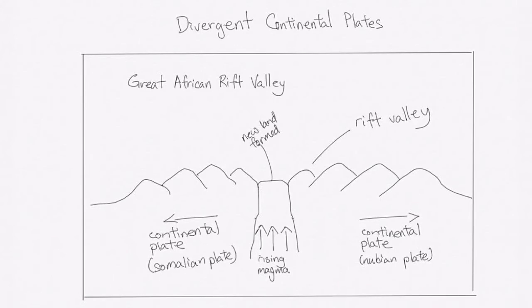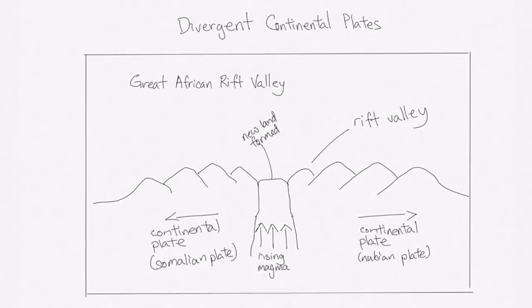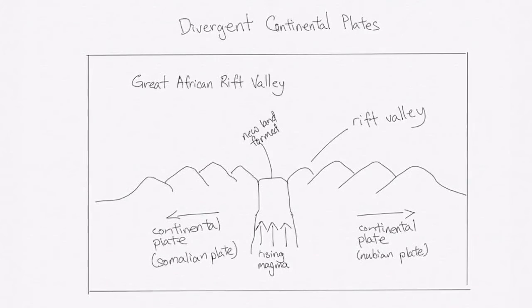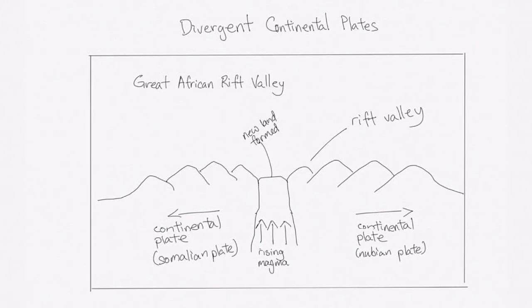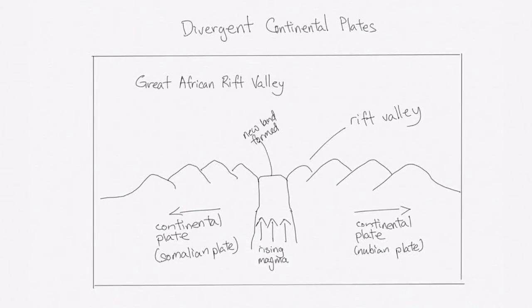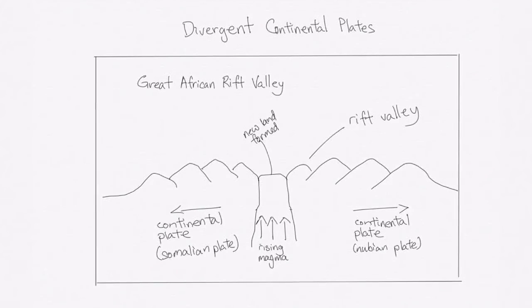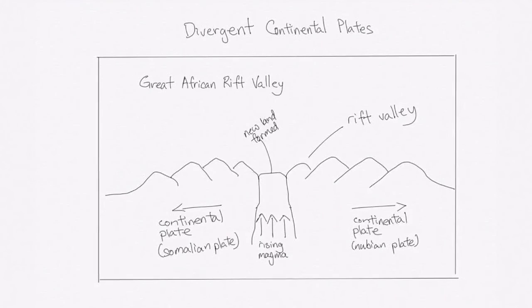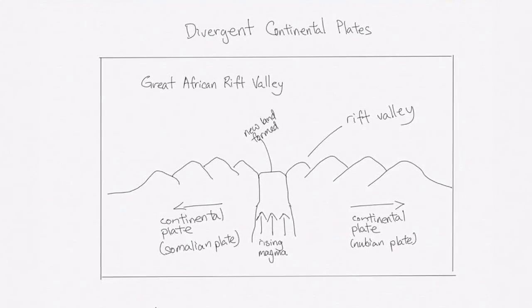Now we move on to Divergent Continental Plates, plates that move apart from one another. Within your syllabus, there is one occurrence of this that is highlighted. This is where you find the Great African Rift Valley. At this location, your Somalian plate moves away from the Continental Plate. Magma rises from the mantle area and new land is formed. As a result of this pushing the two plates apart, the land actually fractures. And henceforth in the diagram, we must show very clearly the fracturing, indicated by the parallel sets of grooves as this forms the Rift Valley.